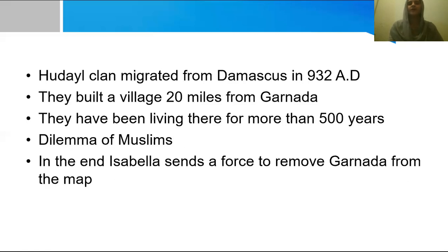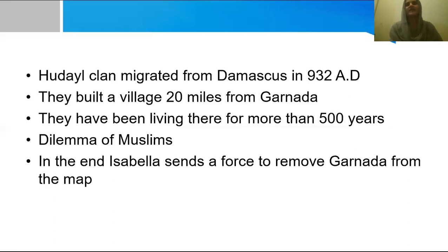When Umar meets the villagers at the village mosque, he suggests the option to convert into Christianity in order to survive. But the villagers collectively reject that option by saying there is no God but Allah and Muhammad, peace be upon him, is his prophet. This reaction brings tears to Umar's eyes and they decide to fight till the end for the sake of their religion. All the villagers, including women, show their concern for religion.